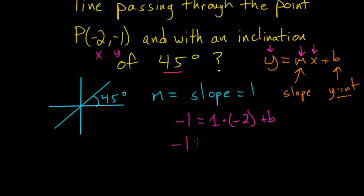Rewriting this we have negative 1 equals 1 times negative 2, which is just negative 2 plus b, and we can add 2 to each side of this equation. Negative 1 plus 2 equals 1, and negative 2 plus 2 cancel out, so we're just left with b. So b is just equal to 1.